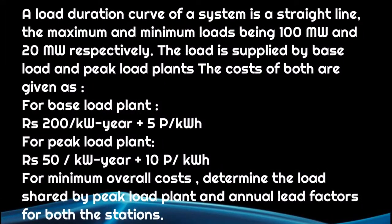Now first I will read the given question. A load duration curve of a system is a straight line. The maximum and minimum load being 100 megawatt and 20 megawatt respectively. The load is supplied by base load and peak load plants. The cost of both are given as: for base load plant, Rs. 200 per kilowatt year plus 5 paise per kilowatt hour. For peak load plant, Rs. 50 per kilowatt year plus 10 paise per kilowatt hour. For minimum overall cost, determine the load shared by the peak load plant and annual load factors for both stations.